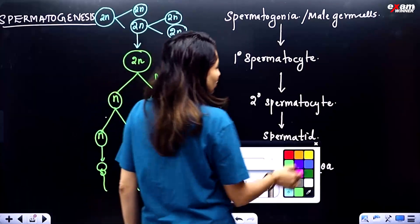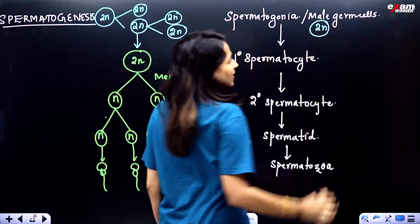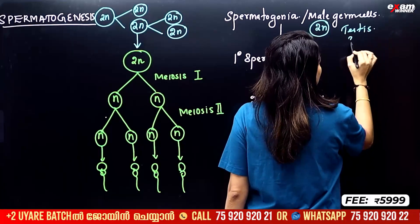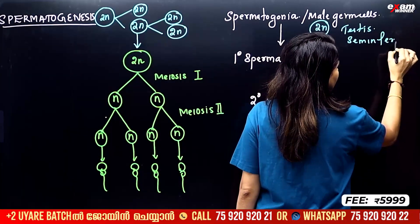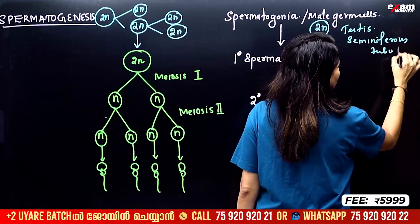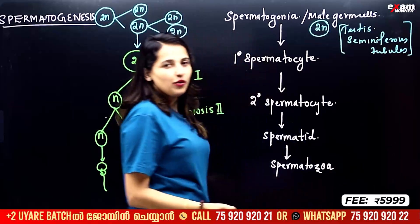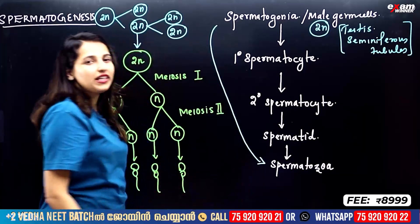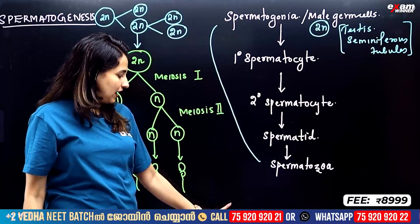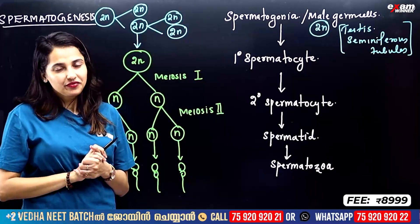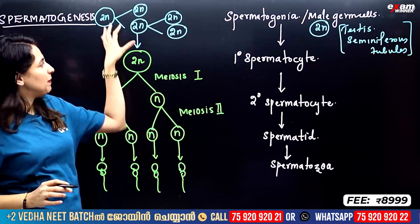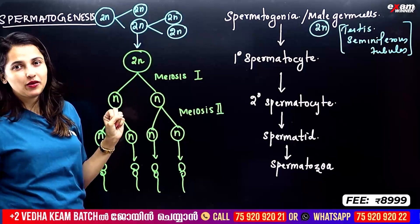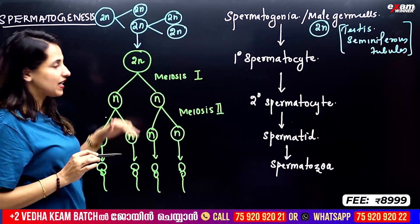Spermatogenesis begins with spermatogonia cells deployed in the testes, specifically in the seminiferous tubules. These diploid cells divide and multiply and grow. This phase is called the multiplication phase.